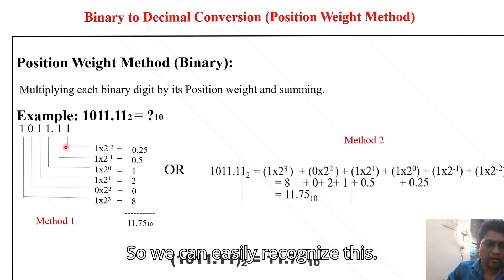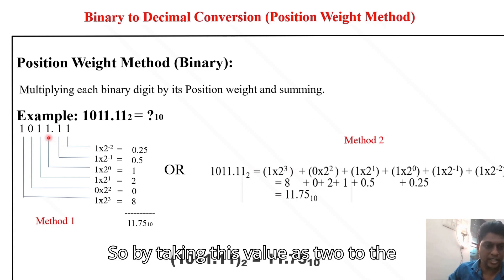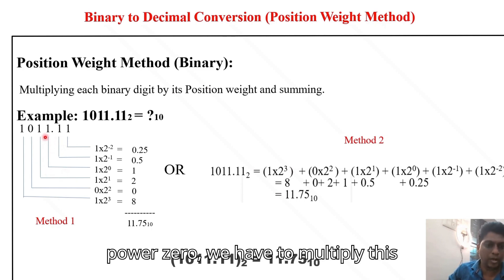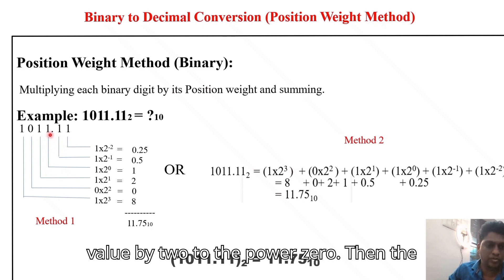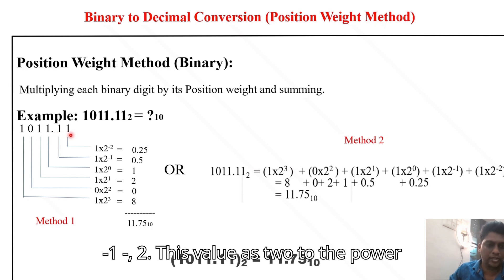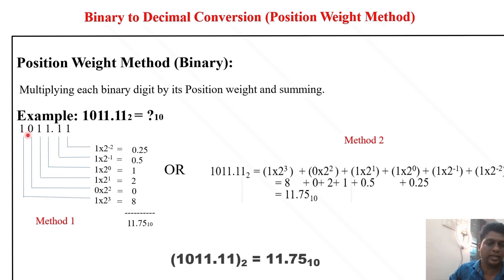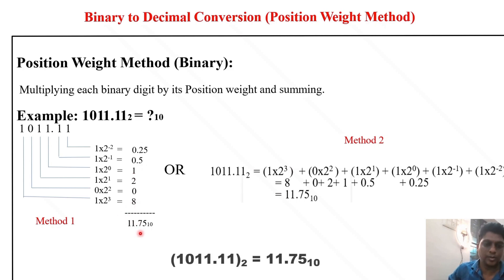Taking the reference bit as 2⁰, we multiply each value by the appropriate power of 2: 2⁰, 2¹, 2², and 2³ for the integer side, and 2⁻¹ and 2⁻² for the fractional side. Summing all these values gives us 7.75.